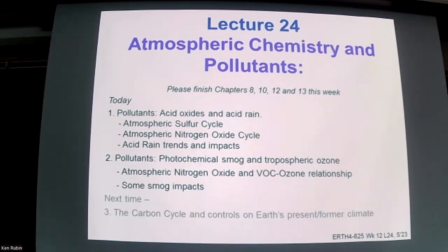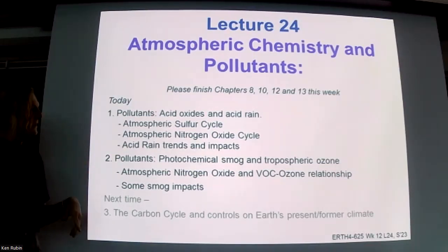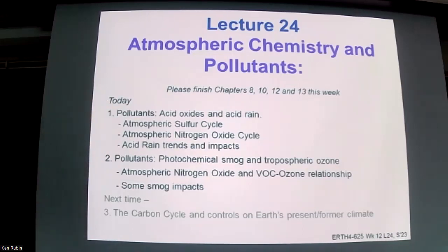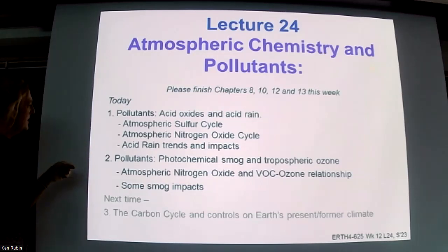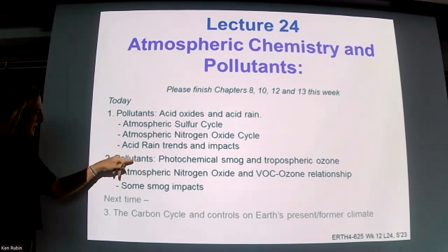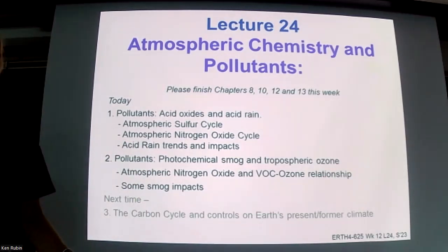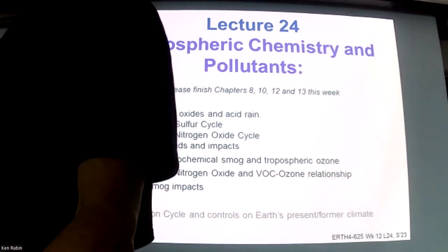The reading, as mentioned previously, is chapters 8, 10, 12, and 13. For about the first half of the session we'll talk about acid oxides and how they get into the atmosphere and contribute to acid rain, including global variations. Then we'll switch to photochemical smog and tropospheric ozone production, which looks different from the stratospheric ozone depletion we talked about last time.